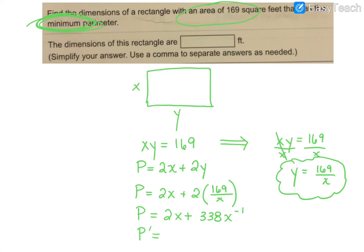So the derivative of 2X is simply 2. And then when I derive the 338, I'm going to pull that negative 1 power to the front, so that'll make that negative 338. And when I subtract 1 off the power, that'll become X to the negative 2. Now, in order to find a maximum or a minimum, we have to set the derivative equal to 0 so we can find where that X value occurs.